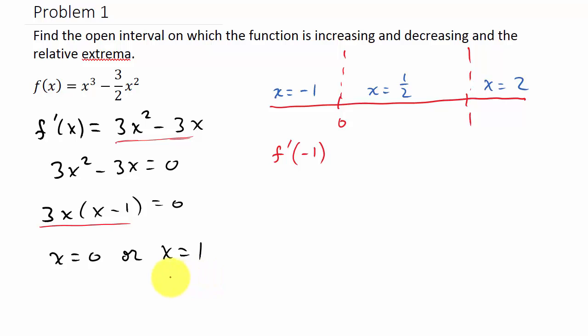So if I do f'(-1), if I plug in -1, that's going to give me -3 out here, and -1 - 1 is -2. So I have a negative times a negative which is positive. So that tells me this is greater than zero. That's all I really care about - if it's positive or negative. I don't care about what the exact value is, I just want to know if it's positive or negative. So since it's positive when I plug in the -1, that means here from zero back to negative infinity, the function is increasing.